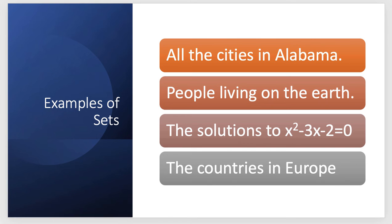For example, here are some concrete examples. All the cities in Alabama will be a set of the cities and Alabama will be containing that set. The earth will be a set containing the people living on the earth. The solutions to x² - 3x - 2 will also be a set, and the countries in Europe will also be a set.